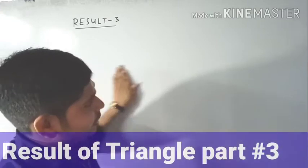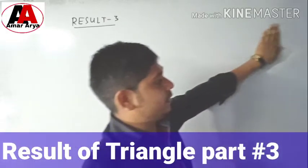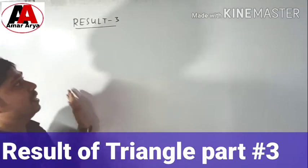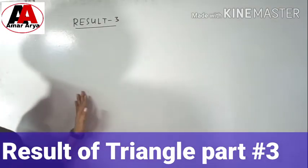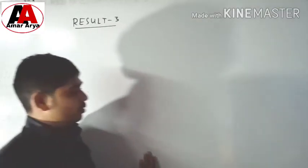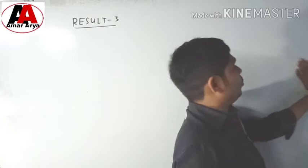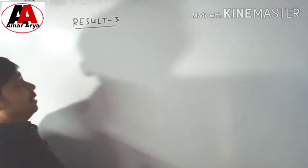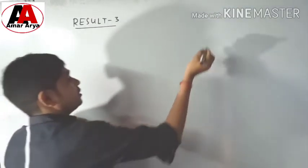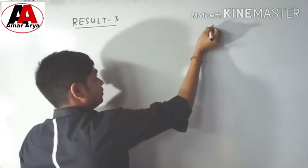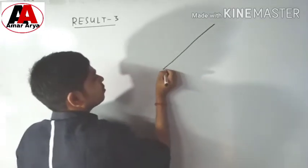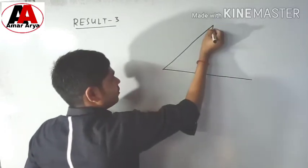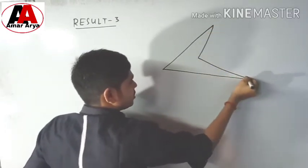We have already discussed so many results regarding triangles. Today we will learn result number three. I already uploaded two videos regarding previous results, so please try to understand this result number three. This is the triangle and here is the shape of a polygon.